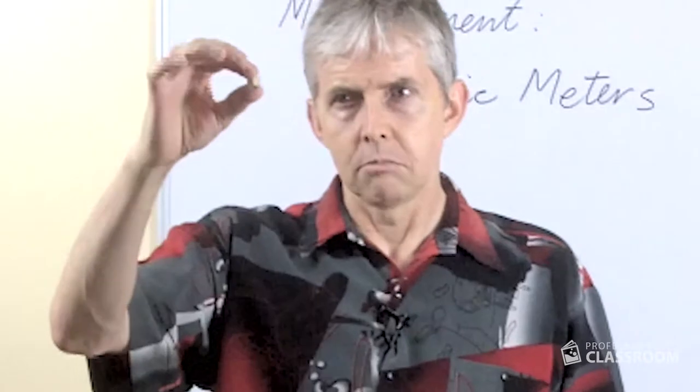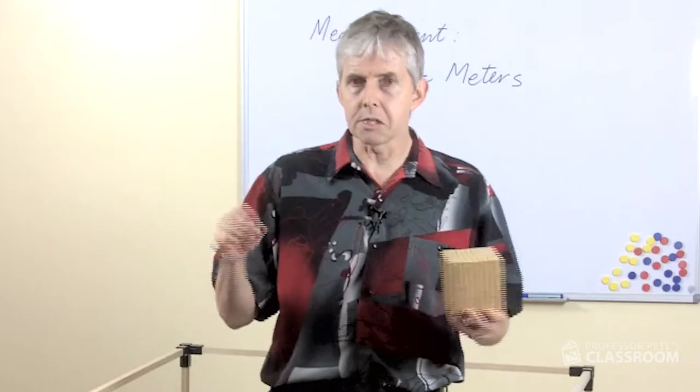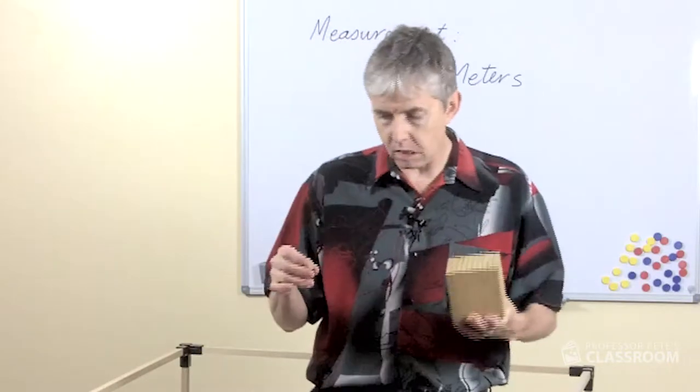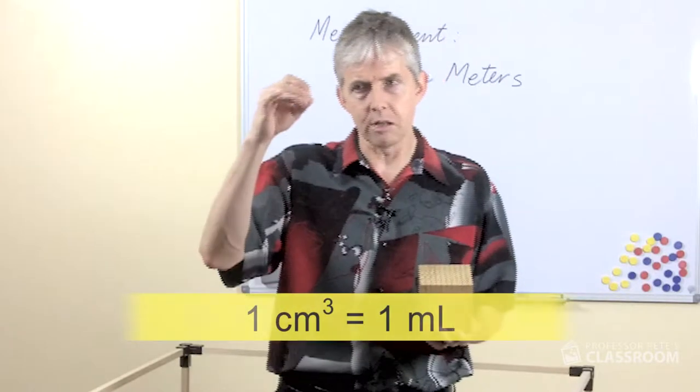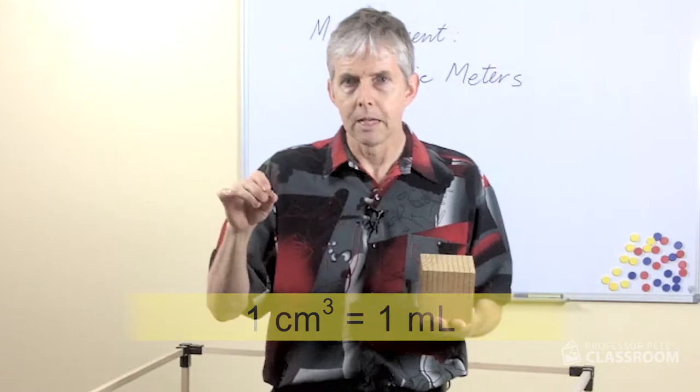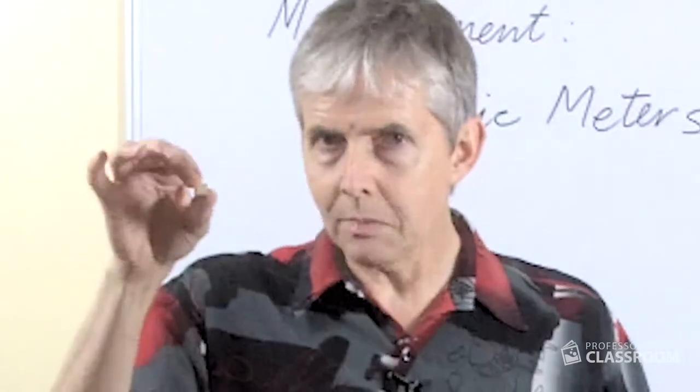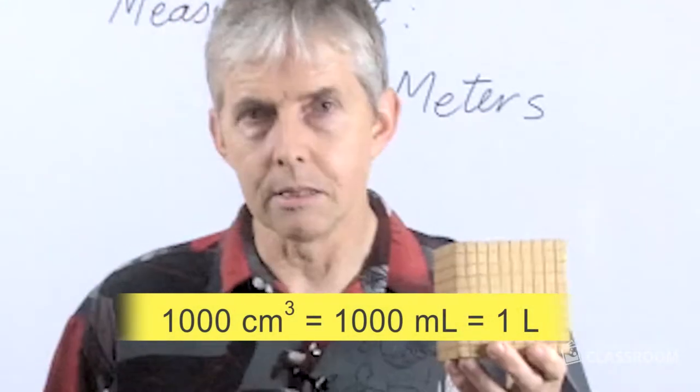So this is a one centimeter cube. This is a thousand blocks so it's actually a thousand cubic centimeters in volume. The neat bit about the metric system is that there are all these connections between the units. And one connection here is that a cubic centimeter that size is exactly the same volume as one milliliter.